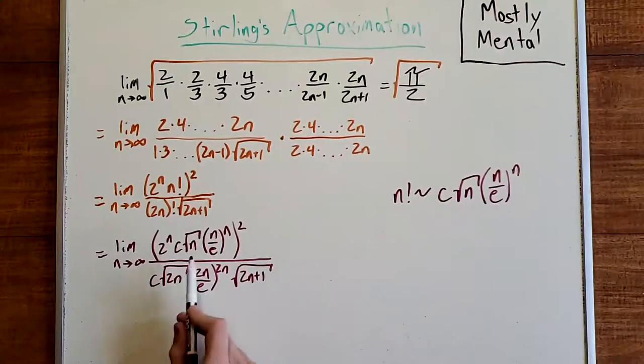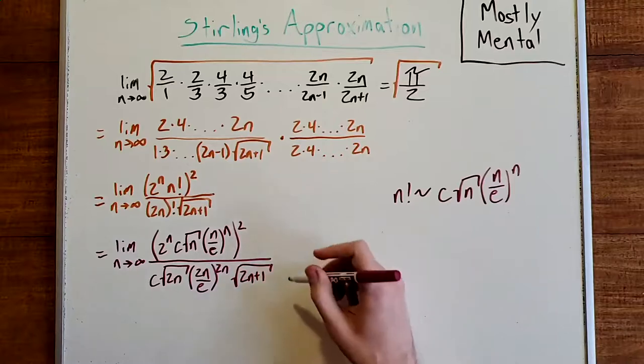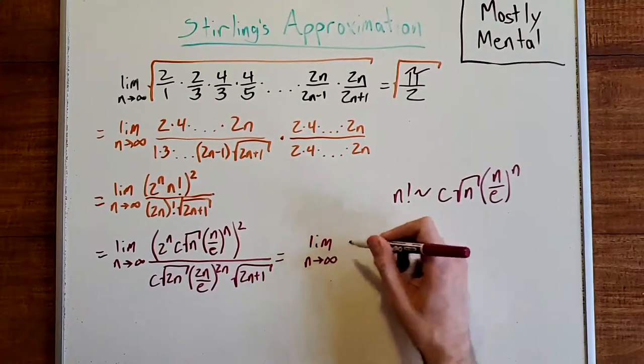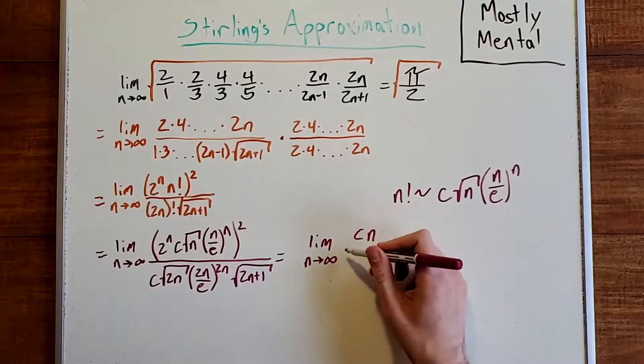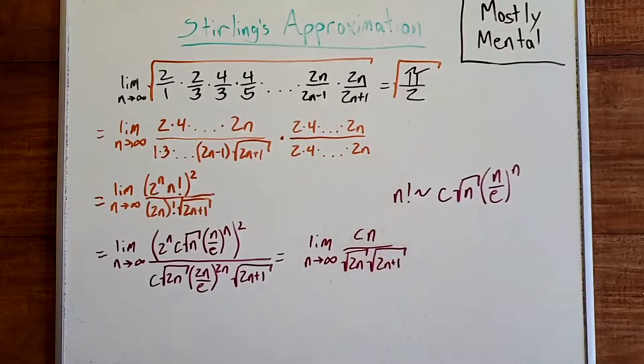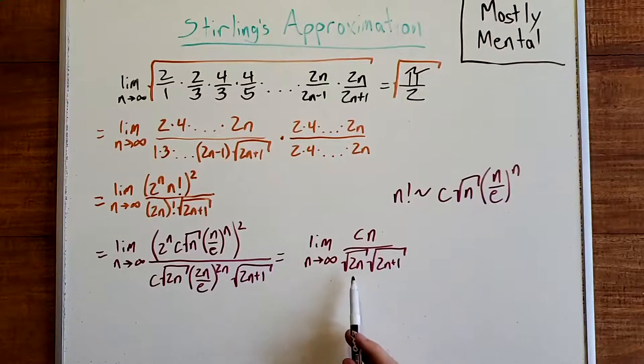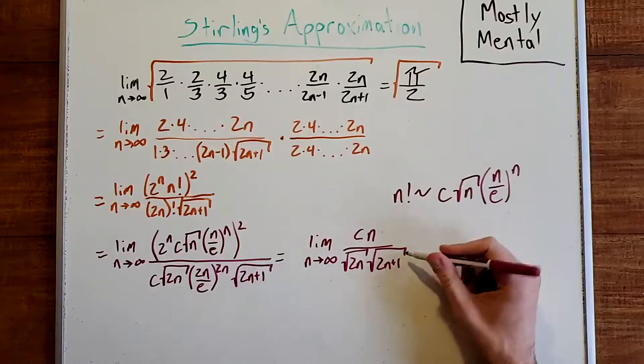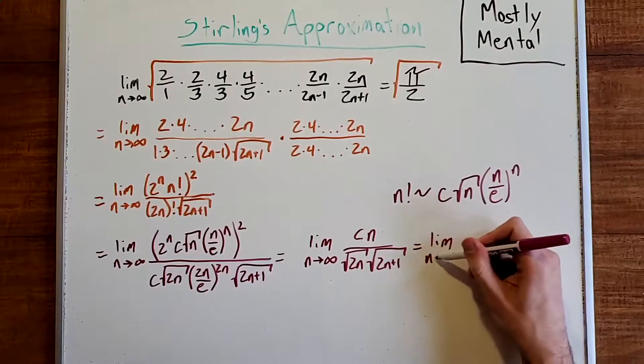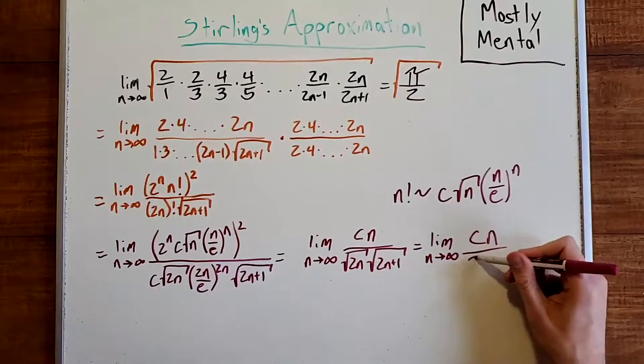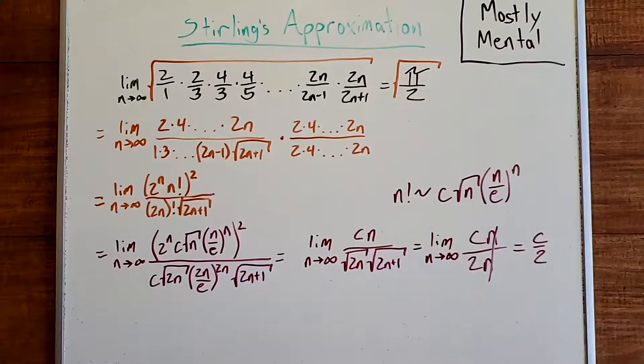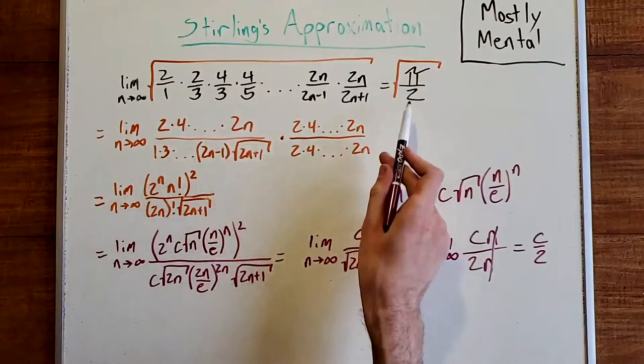And now, a whole lot of stuff in here is going to cancel, and we're going to end up with the limit as n approaches infinity, of cn over the square root of 2n times the square root of 2n plus 1. And as n gets very large, which it will, since we're looking at a limit, these roots here both get really close to the square root of 2n. And so, in the limit, this is the limit as n approaches infinity, of cn over 2n. And the n's cancel, and this gives us c over 2.